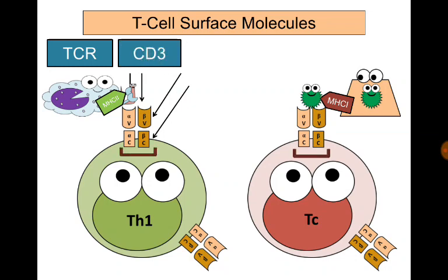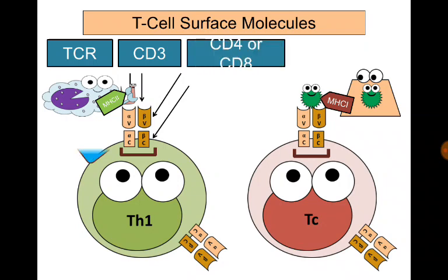The second molecule is CD3. CD represents clusters of differentiation, which are present near the T-cell receptor and help in transmitting signals. Next are either CD4 molecules on the surface of T-helper cells or CD8 on the surface of T-cytotoxic cells, so T-helper cells are called CD4 cells and T-cytotoxic lymphocytes are called CD8 cells.